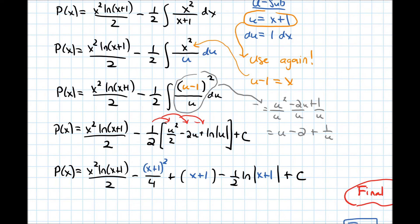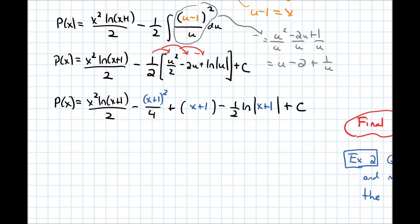We now have our profit in terms of x. Next, we need to find the constant C using our initial information, specifically C(0) = 50.